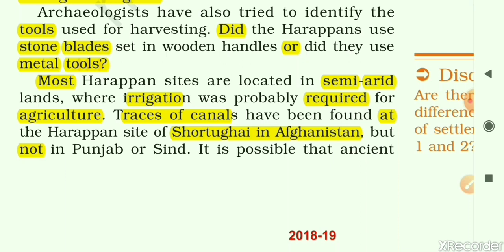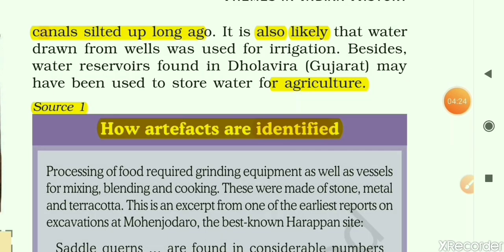It is possible that canals silted up long ago — with usage and the passage of time, canals got filled with silt and sand. It is also likely that water drawn from wells was used for irrigation. Besides canals, water reservoirs found at Dholavira in Gujarat may have been used to store water for agriculture.